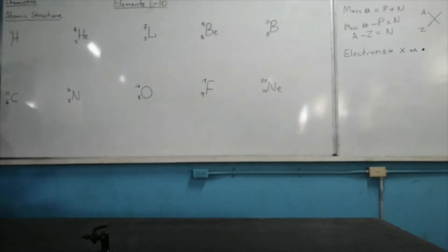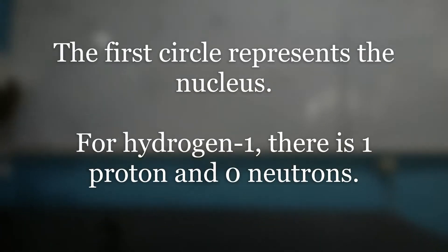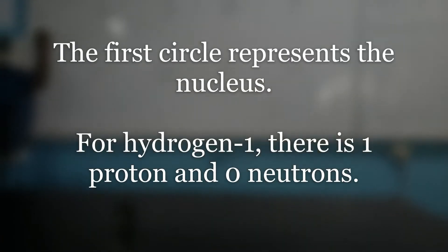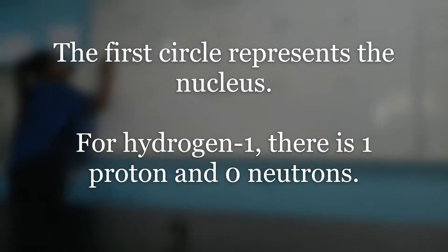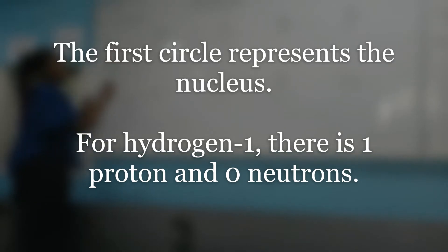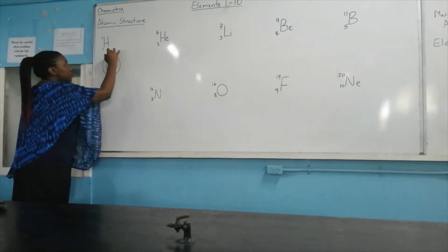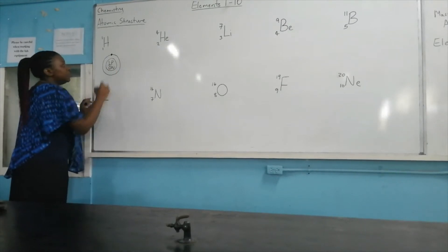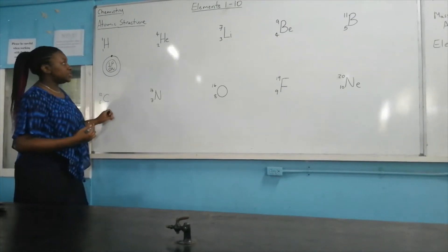The first circle that we draw belongs to the nucleus. Hydrogen has one proton, that is the proton number and atomic number, and zero neutrons. The second circle is shell number 1, and on shell number 1 we put one electron. I'm using dots to represent my electrons.